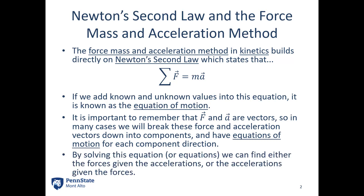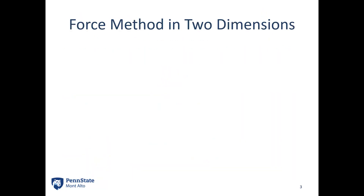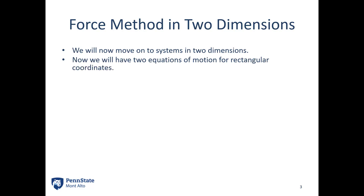By solving the equations, we can find the forces given the accelerations, or find the accelerations given the forces. In two dimensions, we split it into component forms. In the rectangular coordinate system, the sum of forces in x is equal to mass times acceleration in x — the forces acting on the body and the acceleration of that body. And the same thing for the y direction: the sum of forces in y is equal to the mass times the acceleration in y.